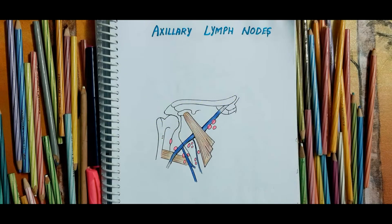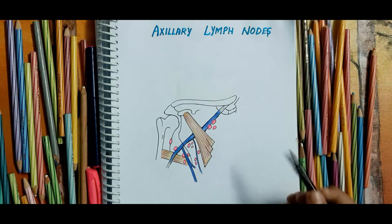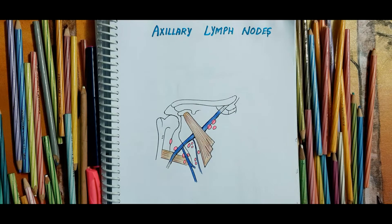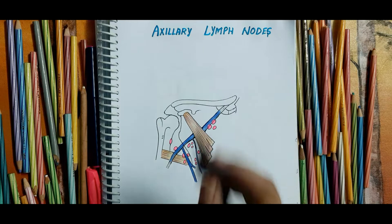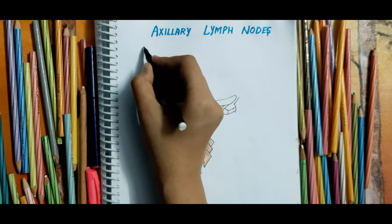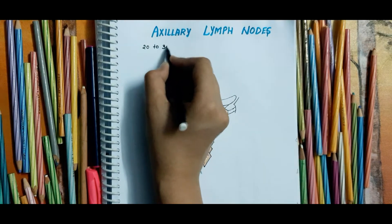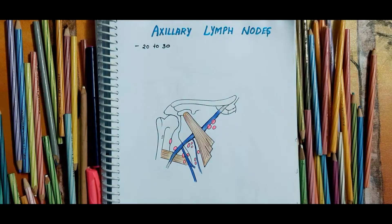Hello guys, welcome back. In this video let's learn about the axillary group of lymph nodes. The axillary lymph nodes are scattered in the fibrofatty tissue of the axilla. Their number varies between 20 to 30.